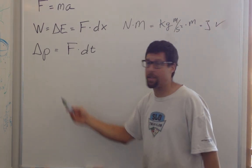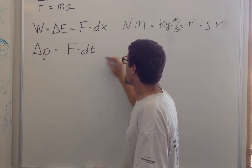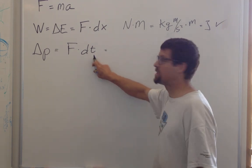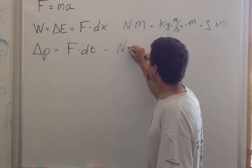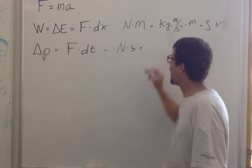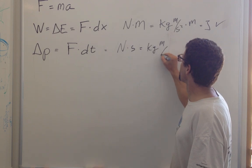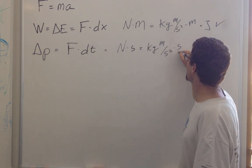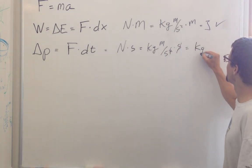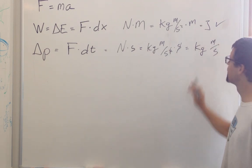Let's check units. Force times time, that would be a newton times a second. That's a kilogram meter per second squared times a second is equal to kilogram meter per second. Excellent. Mass times velocity.